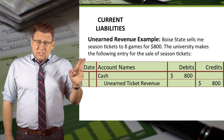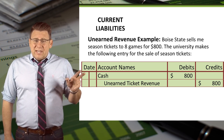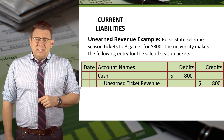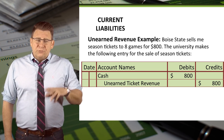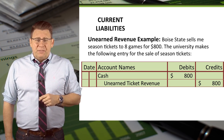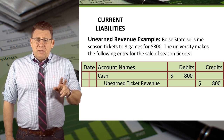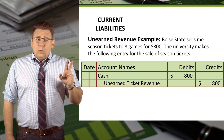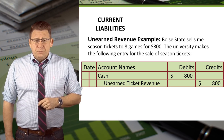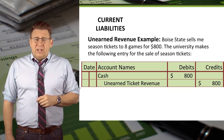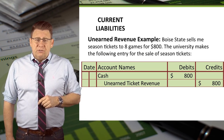This example is on my mind today because I just paid this. Boise State sells me season tickets to eight games for $800 — it's really six games, but I wanted to keep the math simple. The university makes the following entry for the sale of season tickets: cash is debited for $800 and unearned ticket revenue is credited for $800.